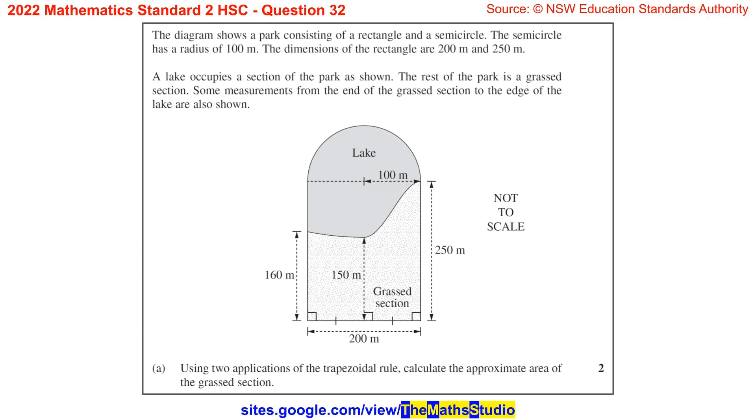The dimensions of the rectangle are 200 metres and 250 metres. A lake occupies a section of the park as shown. The rest of the park is a grassed section. Some measurements from the end of the grassed section to the edge of the lake are also shown.